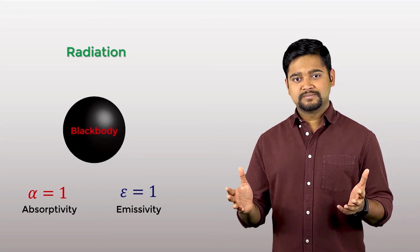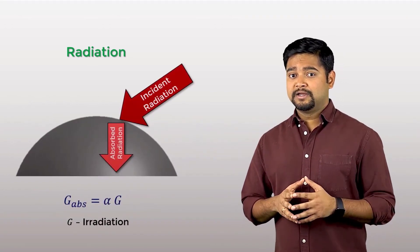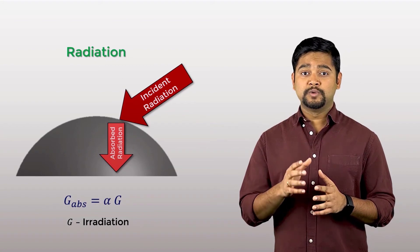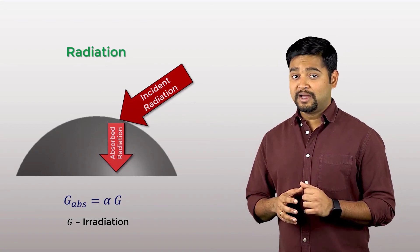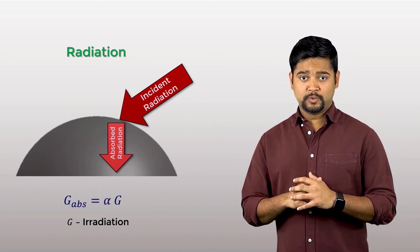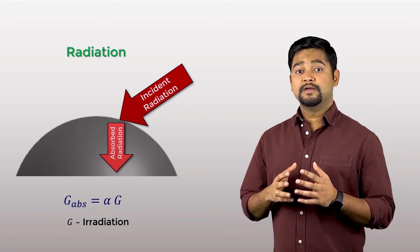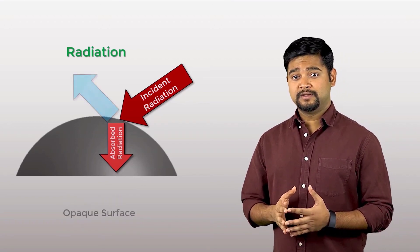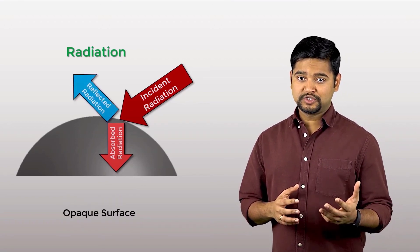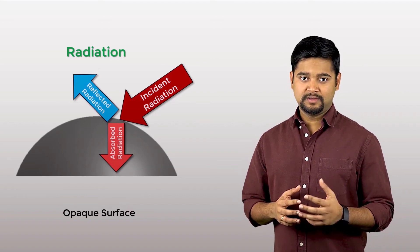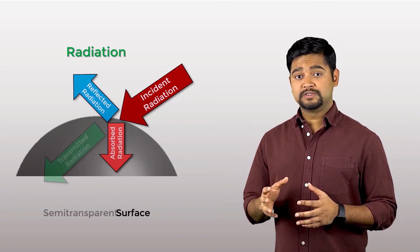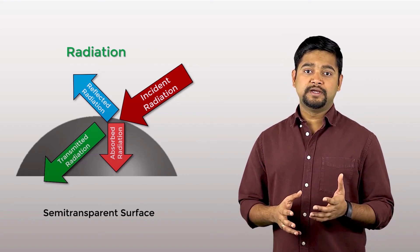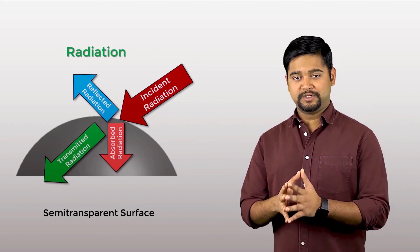The rate at which radiant energy is absorbed by unit surface area can be evaluated using this equation. If the surface is opaque, portions of the irradiation are reflected. However, if the surface is semi-transparent, portion of the irradiation may also be transmitted.